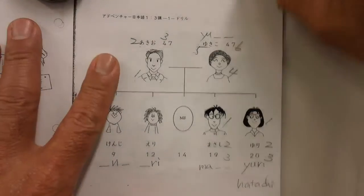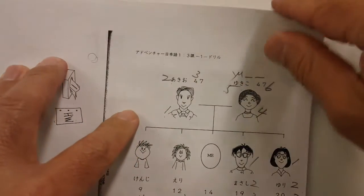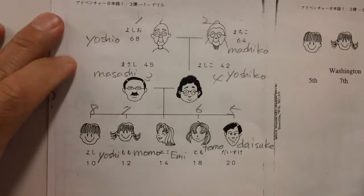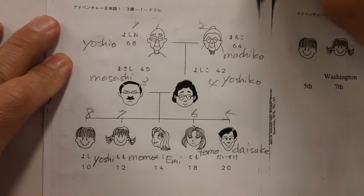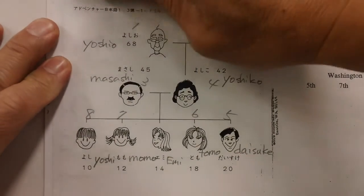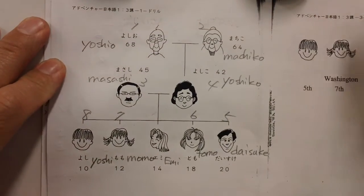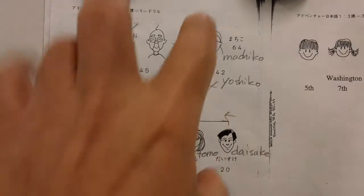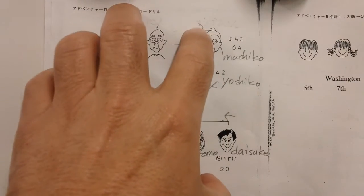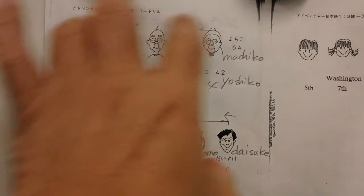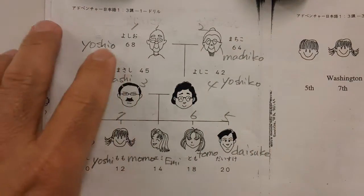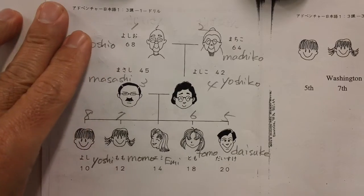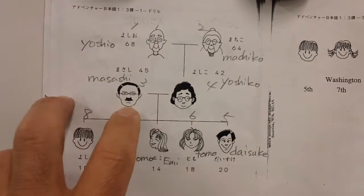The next page is the next section. First of all, you should know all of the family members. This is not your family — this is your friend's family or someone else's family, so they are called a different way.